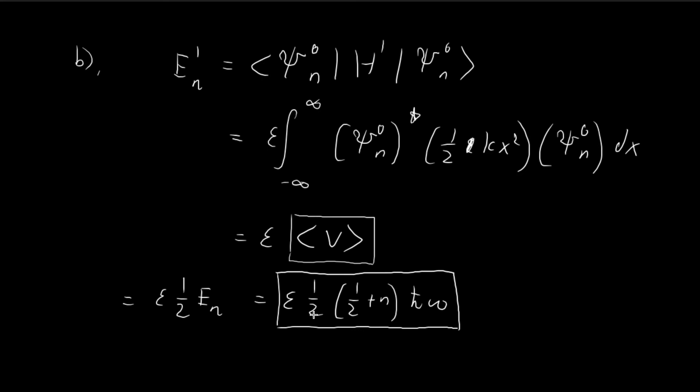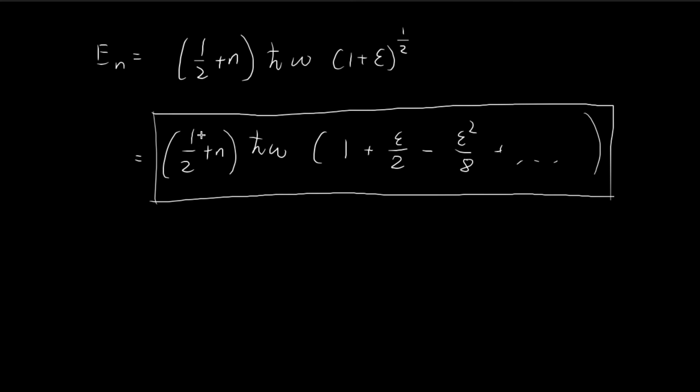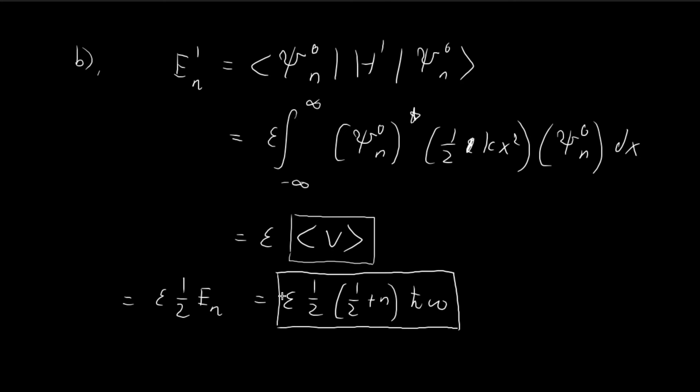And you can see that this answer is actually a pretty good answer, because this corresponds to the first-order term in our exact solution. So if you isolate this first-order term, if you pull out this epsilon over 2, you see we get epsilon over 2 times one-half plus n h-bar omega. And you can see that this is precisely what we obtained using perturbation theory. So you can see that perturbation theory actually yields pretty good results.